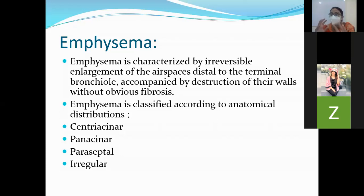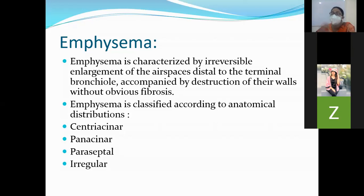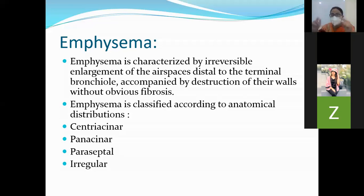This definition of emphysema is very important — please be prepared for it. There are different types of emphysema, and we can classify emphysema according to their anatomical distribution. The types include centriacenar, panacenar, paraceptal (distal acenar), and irregular types.